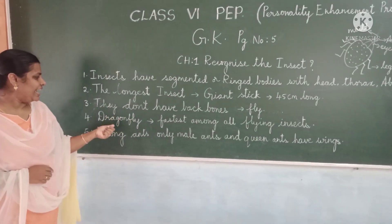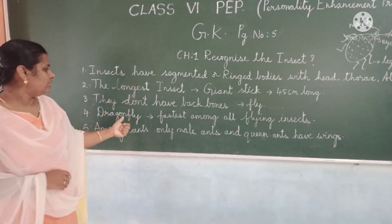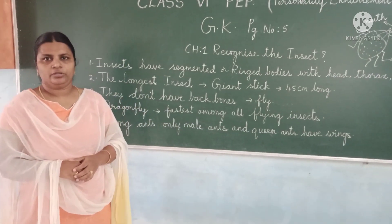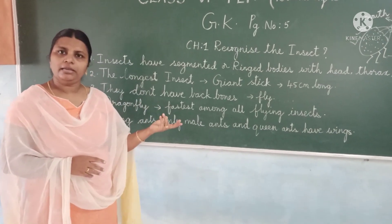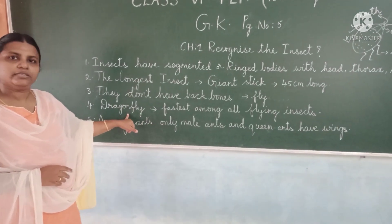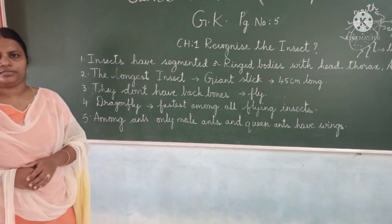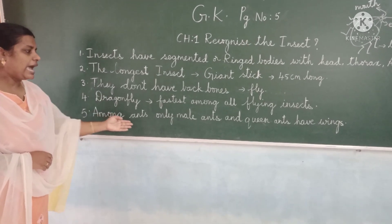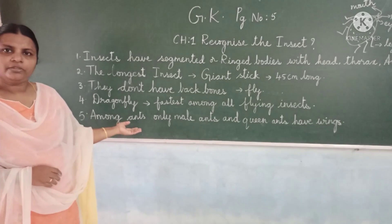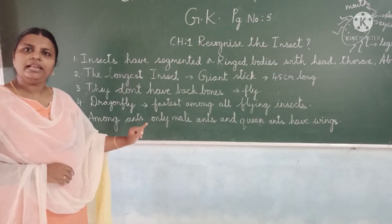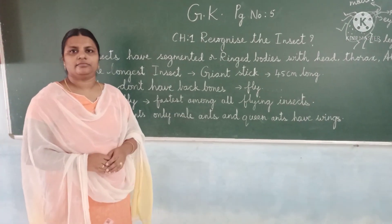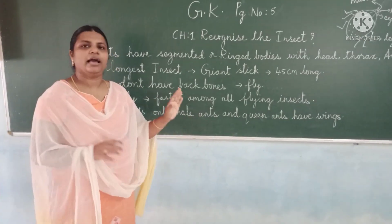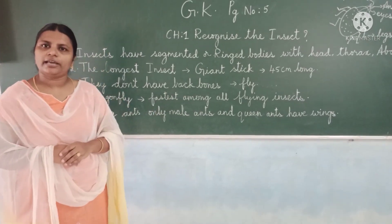Interesting, right? And among all the insects, the dragonfly is the fastest among all the flying insects. And the last but not least — among ants, ants are also insects. The male ants and the queen ants — these two only will have wings. The rest of the ants will not have wings.